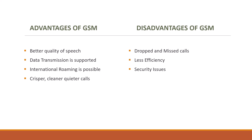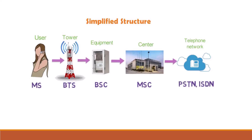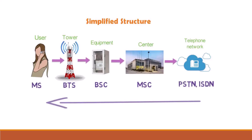The GSM system can be simplified as shown. The user calls a certain number using a mobile. The signal is received by the mobile tower which is BTS. Then it is routed to BSC for allocating the radio channel. Then it reaches the MSC for tracking location and authentication. Finally, the signal is transmitted to the telephone network. At the receiver end, the signal transmission occurs in just the reverse direction.